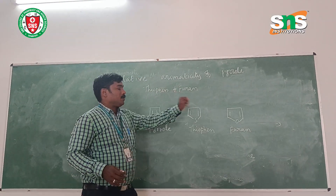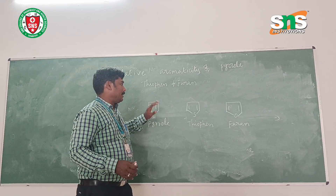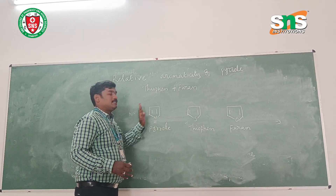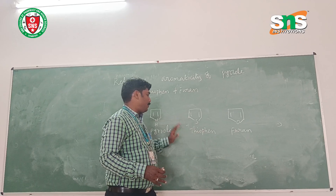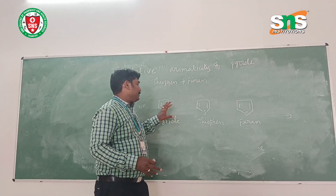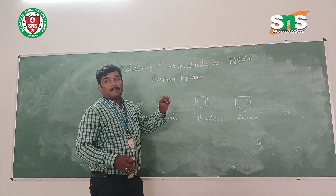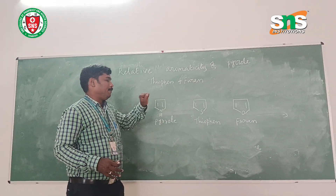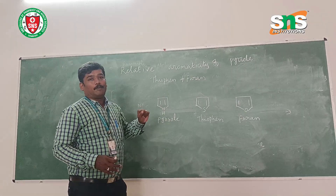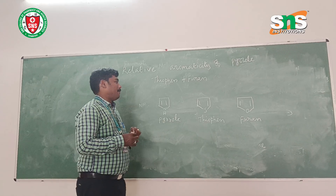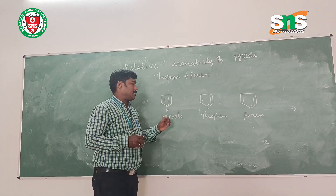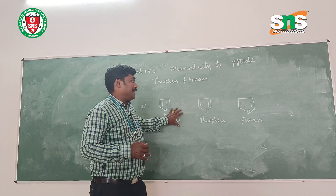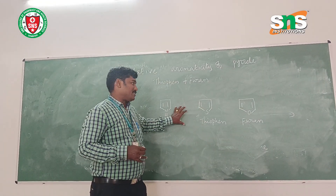All these heterocyclic compounds are aromatic in nature. They have six pi delocalized electrons according to Hückel's rule. Hence, they are aromatic in nature.